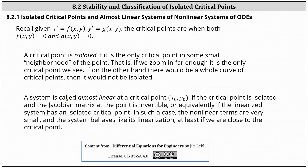A system is almost linear at a critical point x sub zero comma y sub zero if the critical point is isolated and the Jacobian matrix at the point is invertible, meaning it has an inverse. Or equivalently, if the linearized system has an isolated critical point. In such a case, the non-linear terms are very small and the system behaves like its linearization, at least if we are close to the critical point.